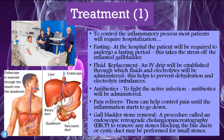An IV drip is established through which fluids and electrolytes can be administered, helping to prevent dehydration and electrolyte imbalances. Since the patient with an inflamed gallbladder may also have a local infection, antibiotics are used to fight the active infection. We can also give the patient pain relievers to help control the pain until the inflammation goes down. We can also perform gallbladder stone removal using a procedure called endoscopic retrograde cholangiopancreatography (ERCP), which can remove small stones blocking the bile ducts or cystic ducts.